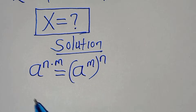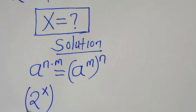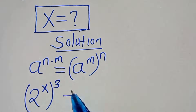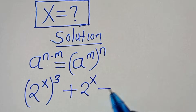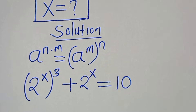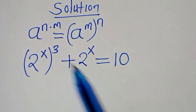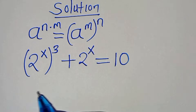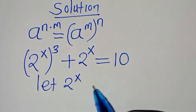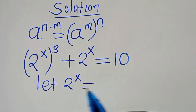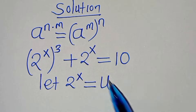Therefore we have 2 to the power of x raised to the power of 3, then plus 2 to the power of x, this is equal to 10. Now 2 to the power of x is common here, so we can represent 2 to the power of x by u. Let 2 to the power of x be equal to u.